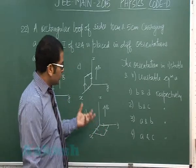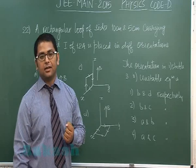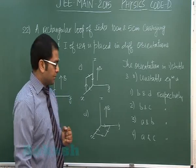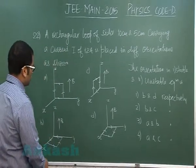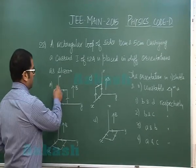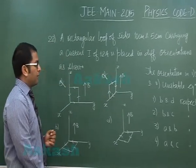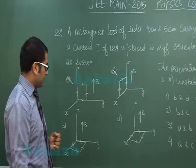So quite obviously the loop behaves as the moment, and if moment is parallel to B it's stable, anti-parallel it's unstable. So there is no question of talking about stable or unstable equilibrium in this and this because their moment vector is perpendicular to B vector.